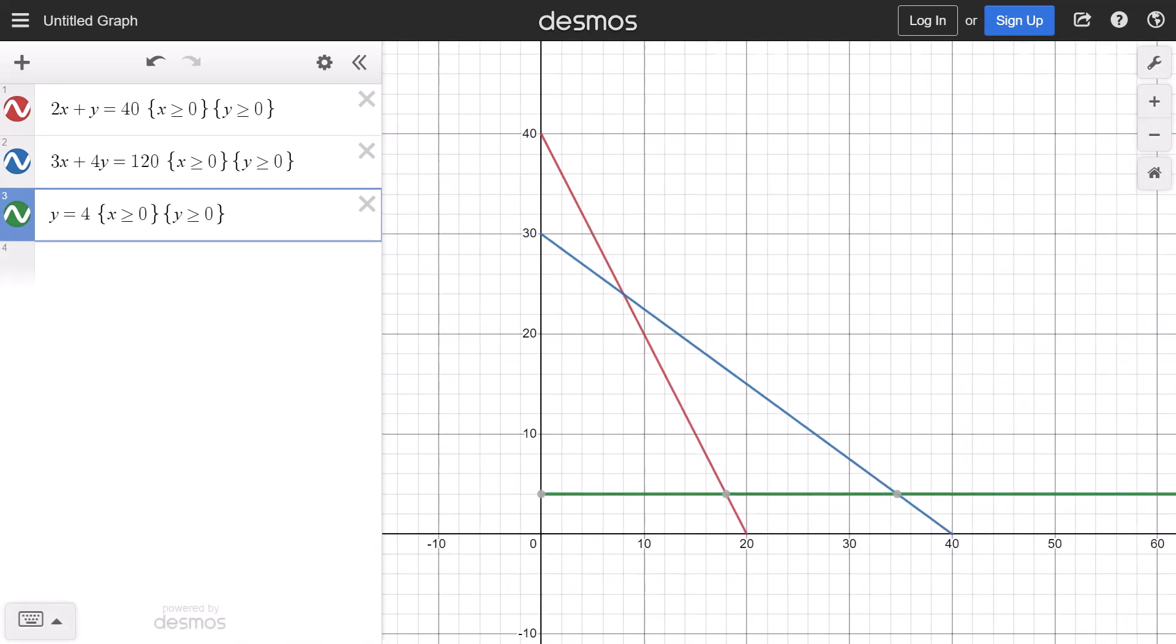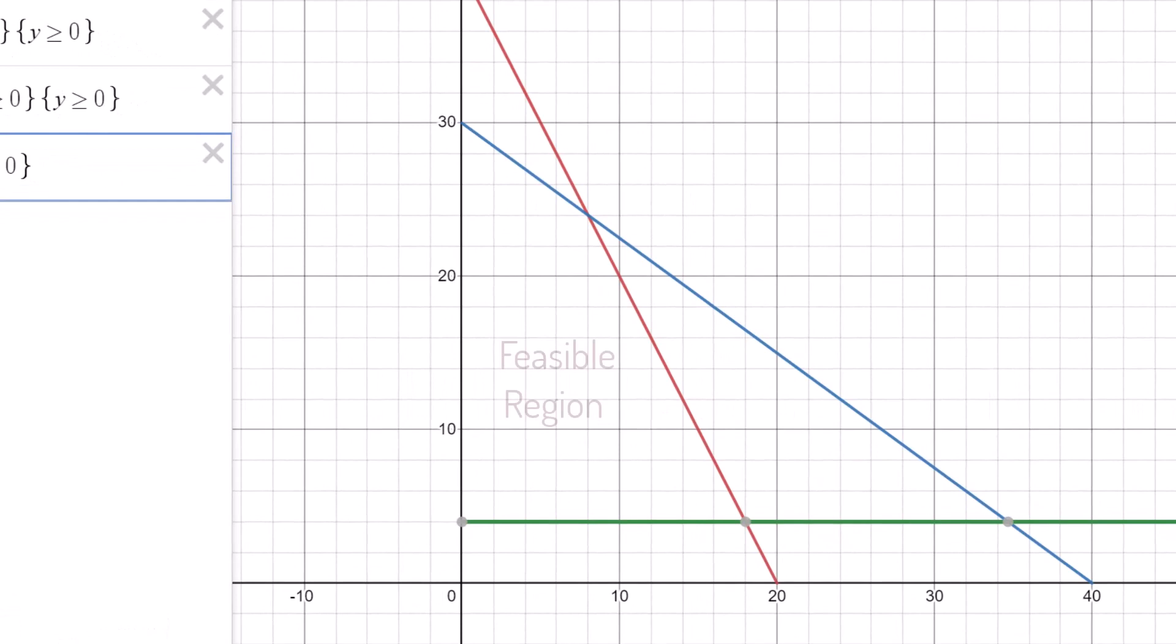I'm going to ctrl scroll to zoom in. Next, I can view the coordinates of the corner points of the feasible region by clicking at each corner and holding for about 2 seconds. If you don't get the actual intersection point, just click and hold again.